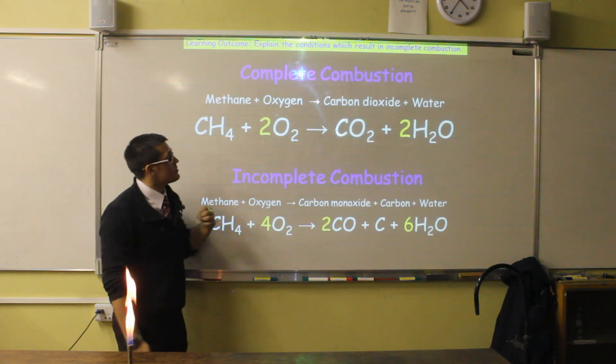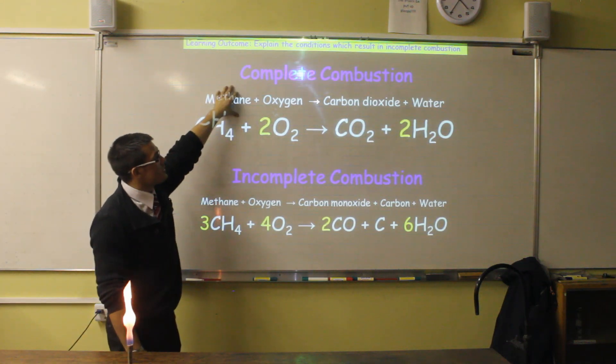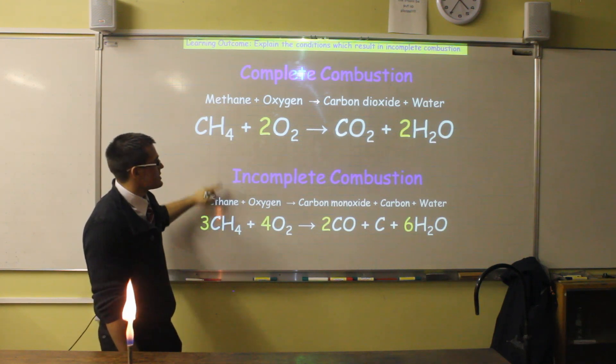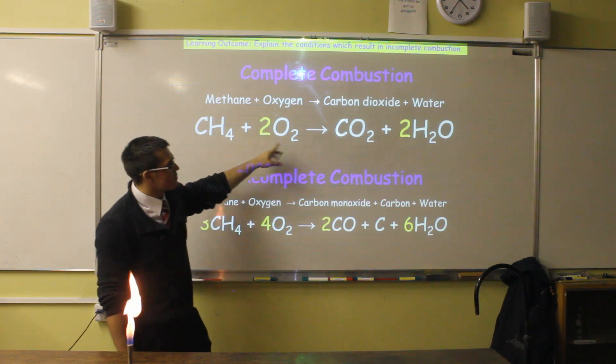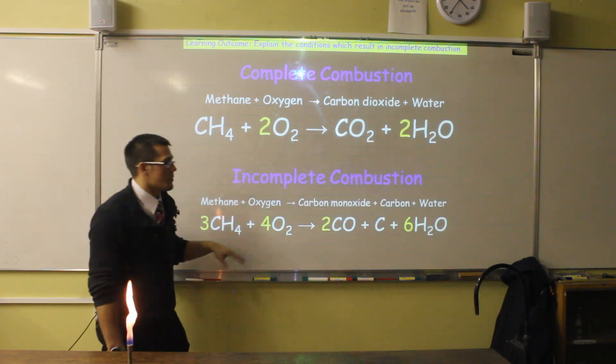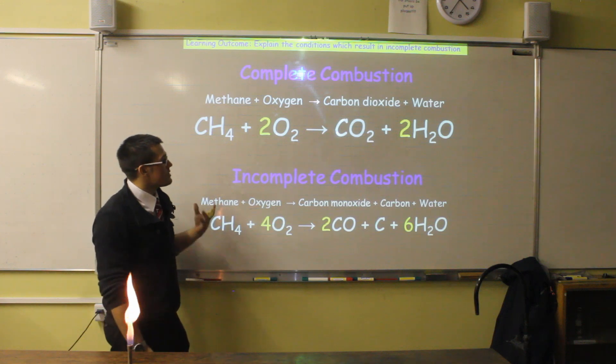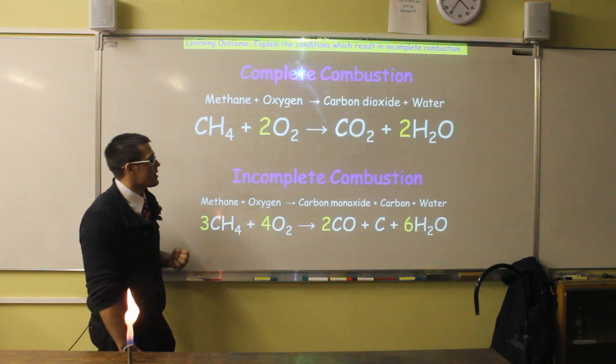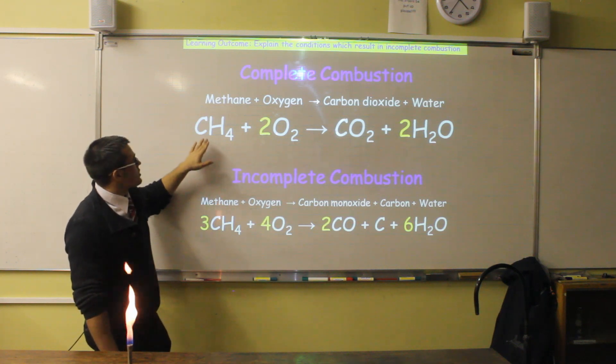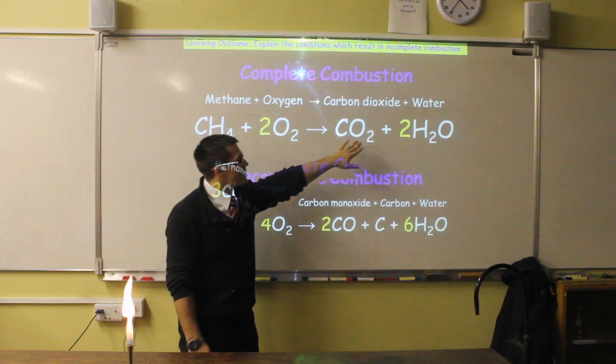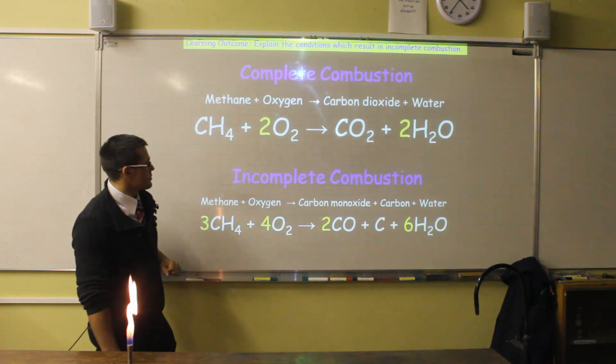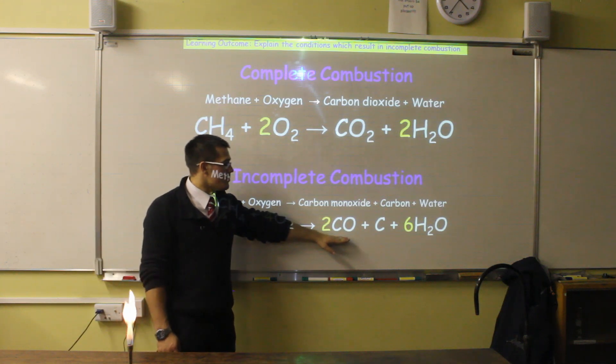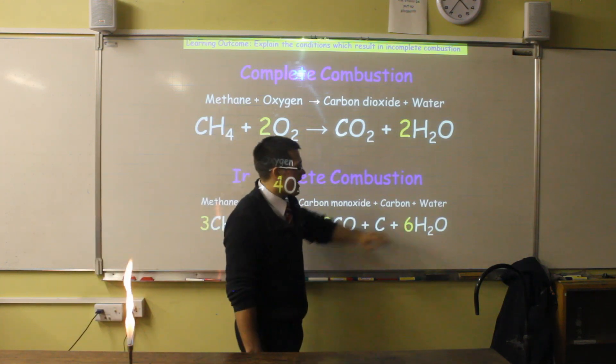So what do you need to know? You need to recognize the difference between complete combustion and incomplete combustion, and you need to be able to write both word equations and symbol equations. These symbol equations have already been balanced for you, but it's a good idea to understand how they're balanced. We have methane plus oxygen goes to carbon dioxide and water for complete combustion. In incomplete combustion, we have methane plus oxygen goes to carbon monoxide, carbon, and water.